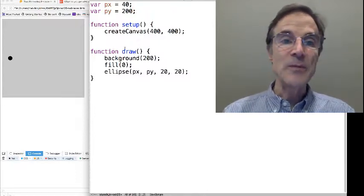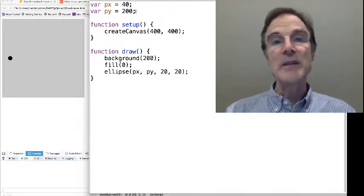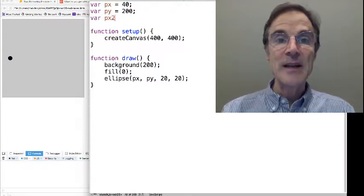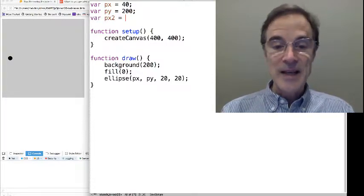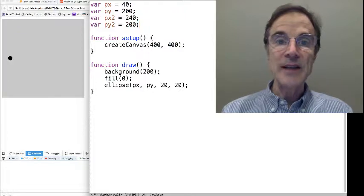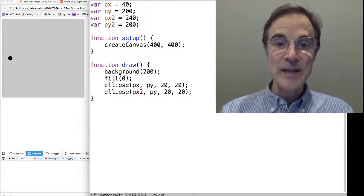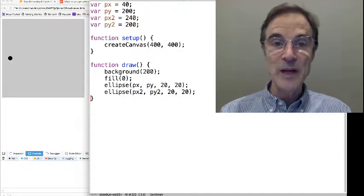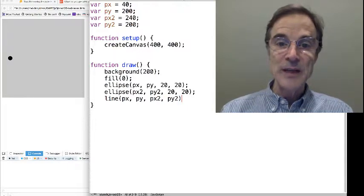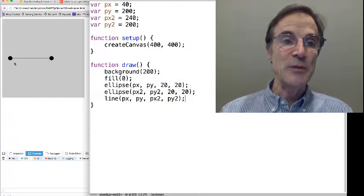Alright, so right now we're running this sketch and we've got one particle. This is sort of where we started off on Monday. Since we want a spring connecting things, we're going to make a second particle. So let's just make, we'll call it px2, and maybe we'll put that at 240, and py2, which we'll leave that at 200. And we'll go down here and we want to draw two ellipses. One at pxpy and one at px2py2, and let's make a line connecting them. So we'll go from pxpy to px2py2. There's the line, and we'll run that, and there we go. We have two particles connected by a line.